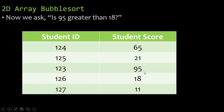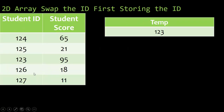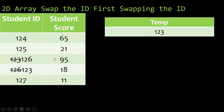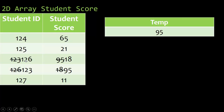Now we ask ourselves — keeping going with the bubble sort — is 95 greater than 18? It is. So it's time to swap both the ID and the student score, but we can only do one at a time. So the first thing we're going to do is take 123 and place it into our temporary variable, because if we just take 126 and overwrite 123, it's gone. That is the purpose of the temp variable. I move 126 where 123 was, then take 123 from my temp and place it where 126 was. So we've swapped the IDs. Now it's time to swap the scores: take 95, place it into my temp variable, move 18 where 95 was, then take 95 out of my temp variable and move it where 18 was. And now 126 and 18 are tied together, 123 and 95 are tied together.